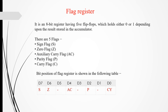Now we will see the flag register. It is an 8-bit register having 5 flip-flops which hold either 0 or 1 depending upon the result stored in the accumulator. The 5 flags are: sign flag, zero flag, auxiliary carry flag, parity flag, and carry flag. In the flag register, bit D7 represents the sign flag, D6 represents the zero flag, D4 represents the auxiliary carry flag, followed by the parity flag and carry flag.